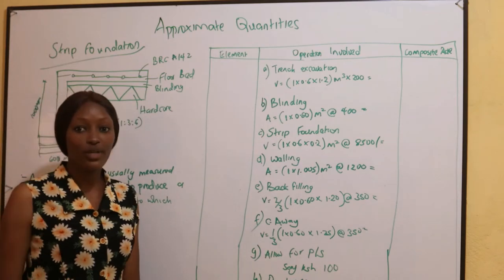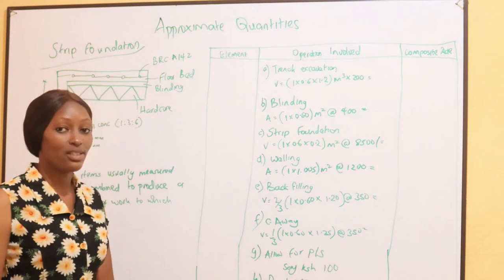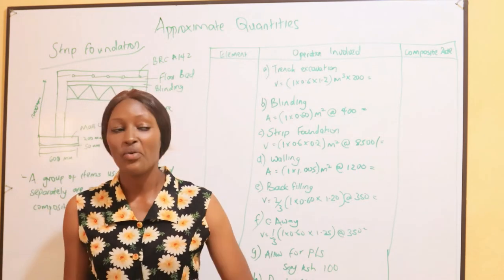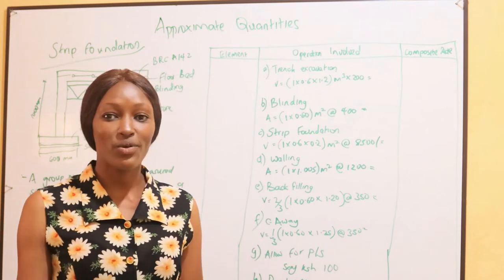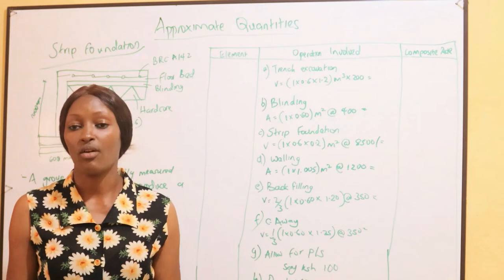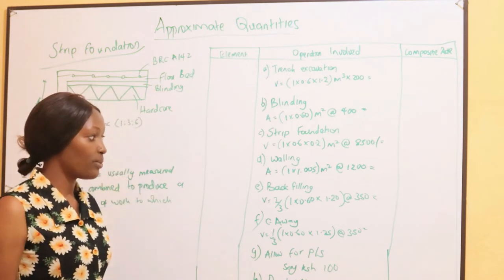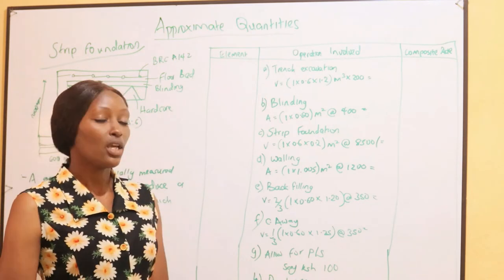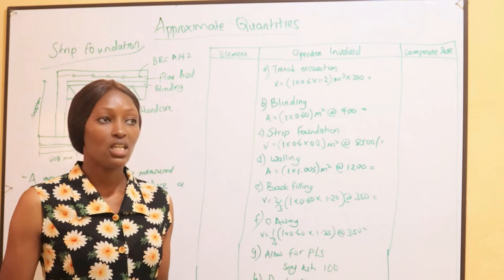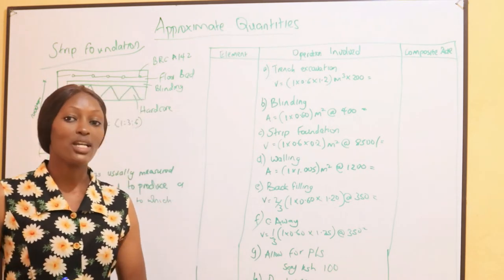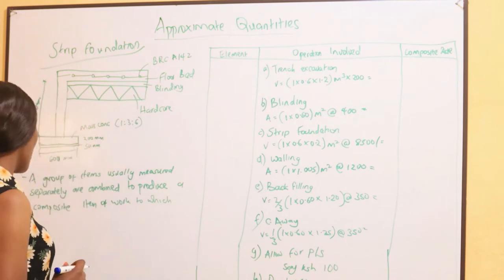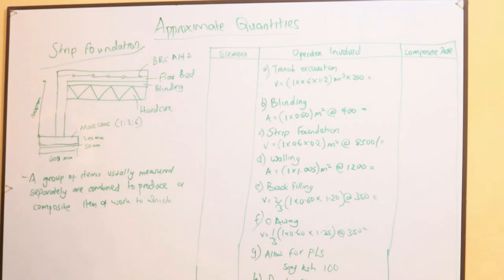Our last method of approximate estimation is the Approximate Quantities Method. We have progressed from the functional unit method, to the floor area method, the cubic method, the storey enclosure method, and now finally the approximate quantities method. This method is used when drawings and specifications — such as concrete direction — are available. It is the most accurate method of approximate estimation, more accurate than all the others we have discussed.